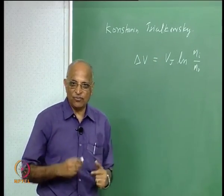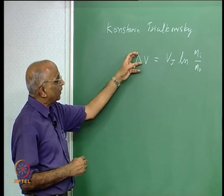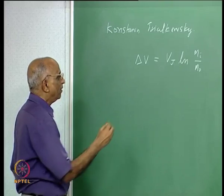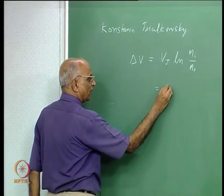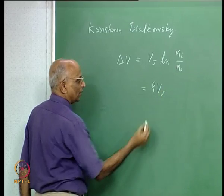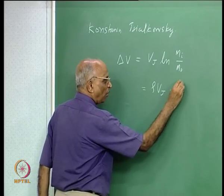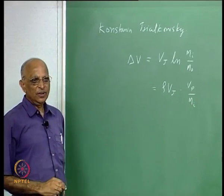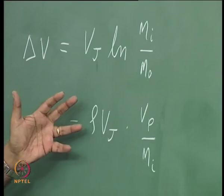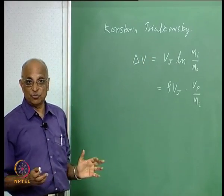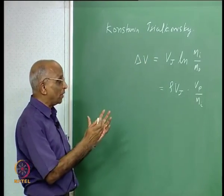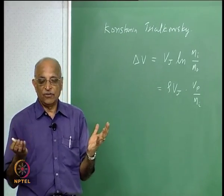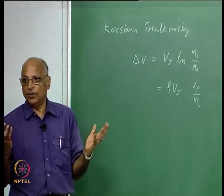We also went one step further. We asked: suppose the rocket has a small amount of propellant mass and more inerts. We found that this equation gets slightly modified as rho times the jet velocity times the volume of the propellant divided by the initial mass. We introduced the payload mass fraction, the propellant mass fraction, and the structural mass fraction, and related these in the earlier class.